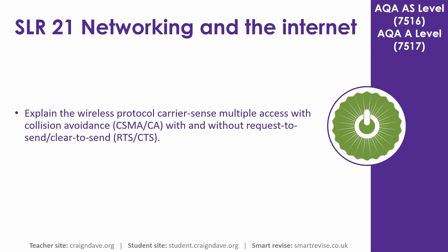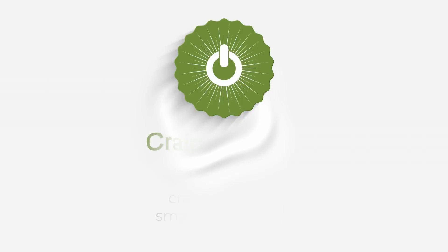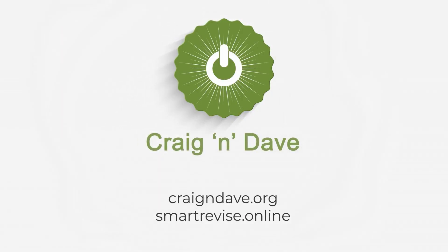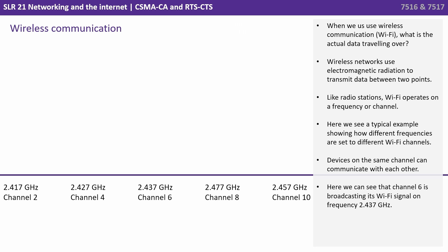In this video we take a look at the wireless protocol Carrier Sense Multiple Access with Collision Avoidance, with and without Request to Send/Clear to Send. When we use wireless communication, what is the actual data traveling over? Wireless networks use electromagnetic radiation to transmit data between two points. Like radio stations, Wi-Fi operates on a frequency or channel.